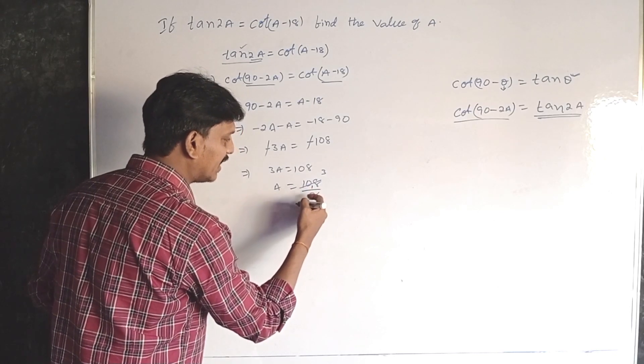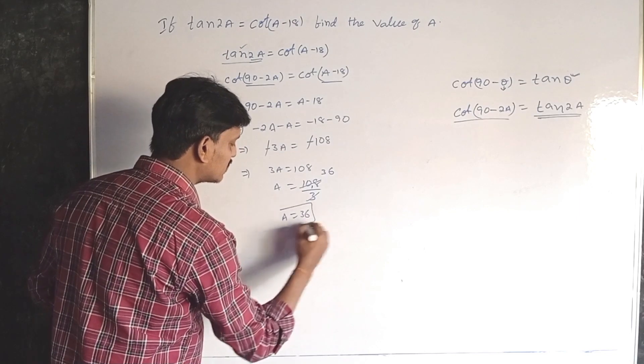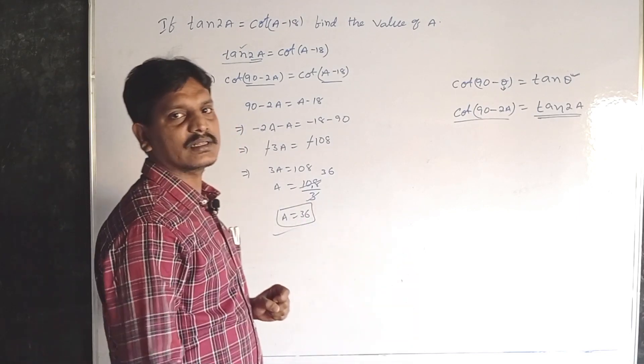One remaining. 18, 36. Here a is equal to 36. It is the final answer. Thank you.